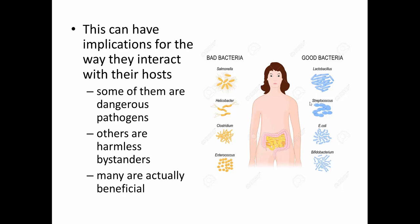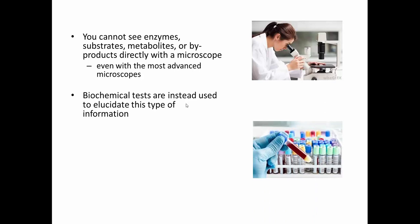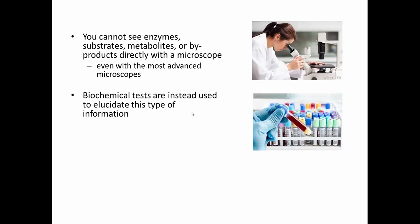These metabolic properties — enzymes, substrates, and byproducts — can categorize microbes into one of three general categories: harmful, more or less neutral, and actually beneficial. However, you cannot determine just by looking at the bacteria what kinds of enzymes or byproducts you're dealing with. These are not visible with any kind of microscope — enzymes are a type of protein that's too small to be seen even with advanced microscopy. So you don't get to see them directly; you have to test for them indirectly. This is where the idea of biochemical testing comes in.